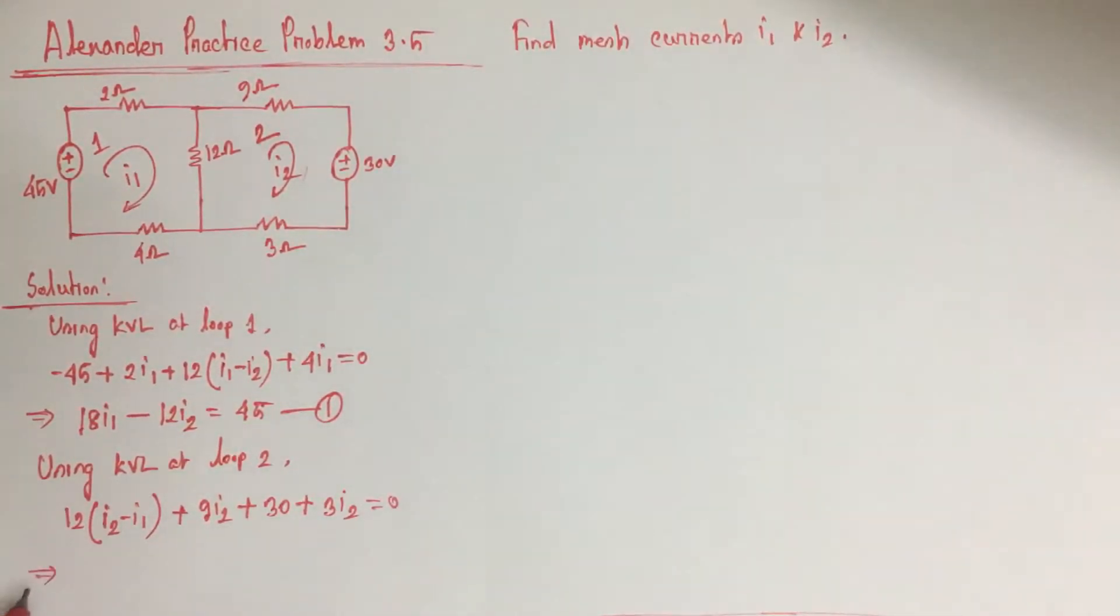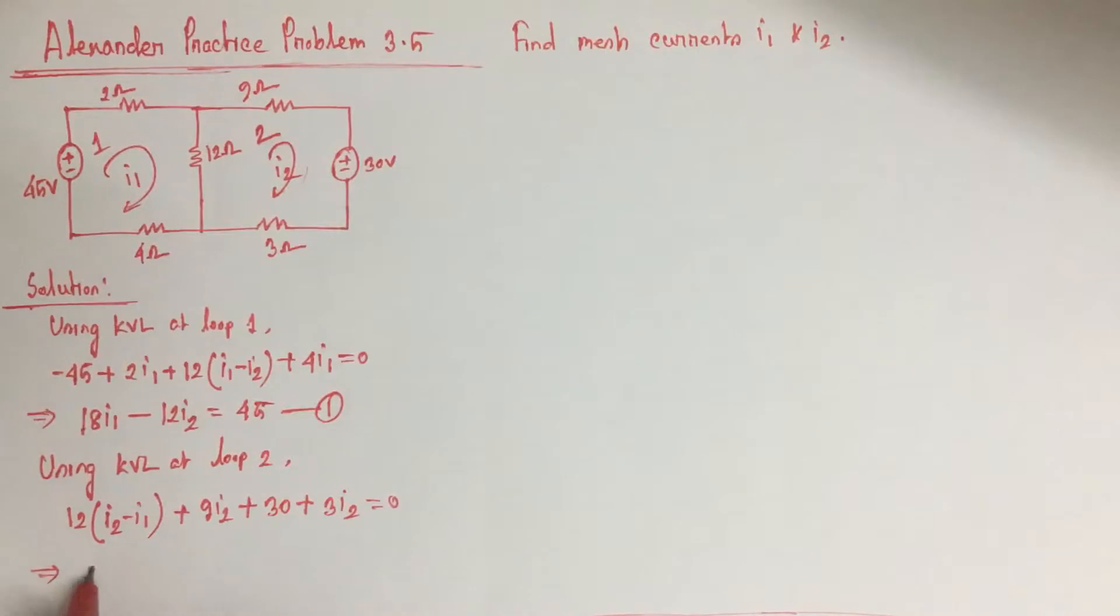Simplifying the equation, we will have 24I2 minus 12I1 equals minus 30. Let this be equation 2.